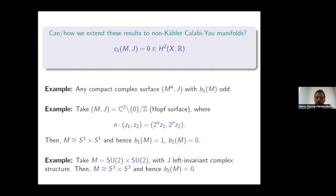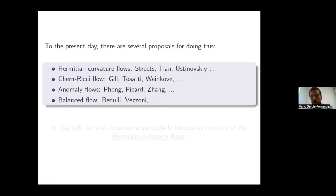Another example: in complex dimension three, you can take the group manifold SU(2) × SU(2) with an integrable left-invariant complex structure. Since SU(2) is diffeomorphic to S³, the manifold is diffeomorphic to S³ × S³, and the second Betti number is zero, so it cannot be Kähler. These are two very explicit non-Kähler examples.